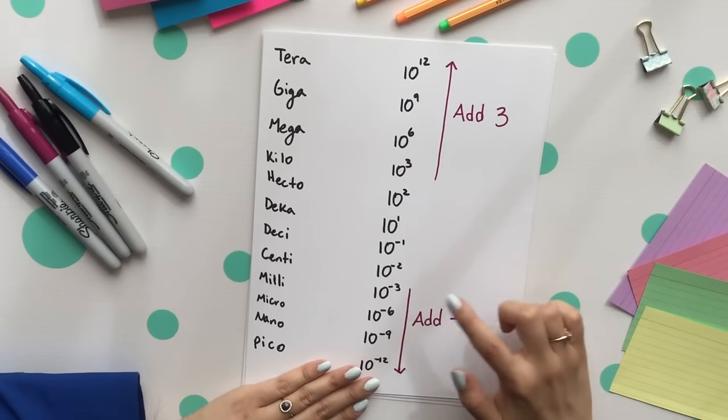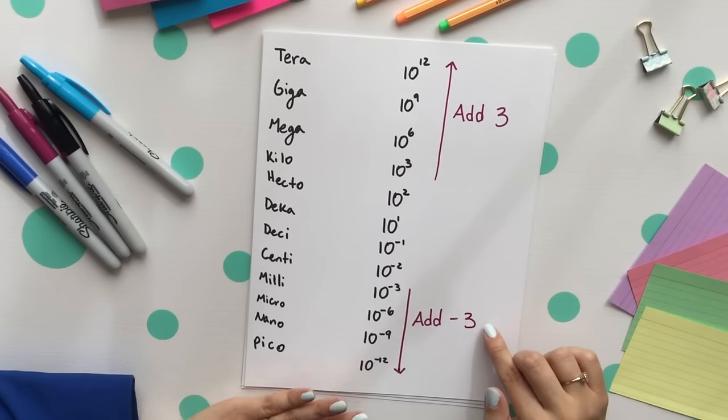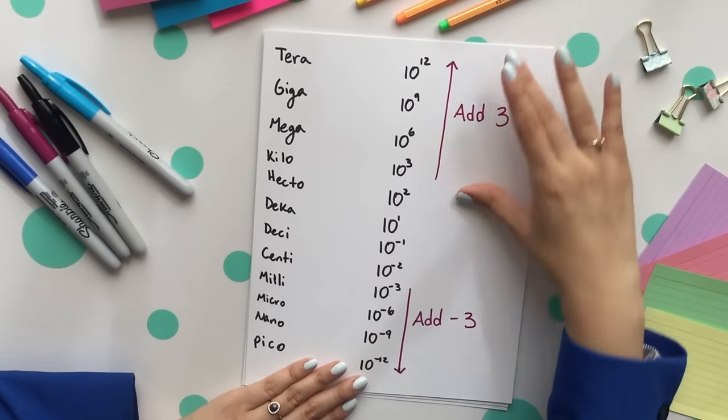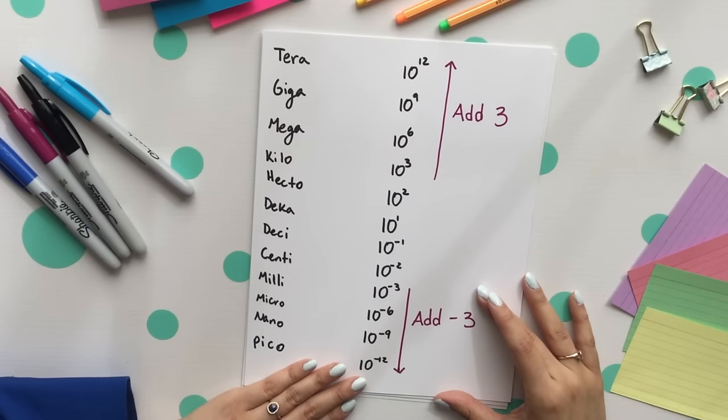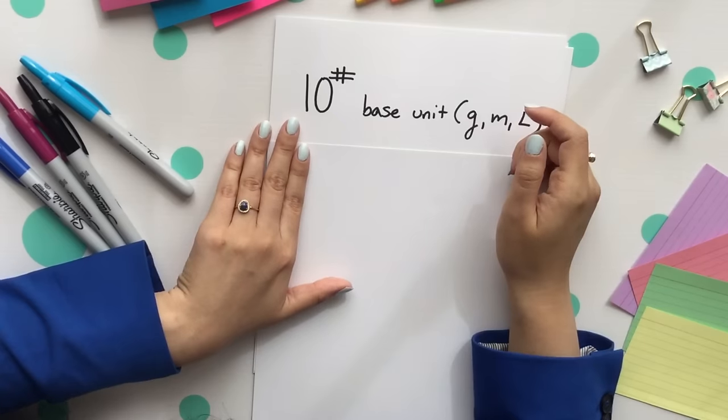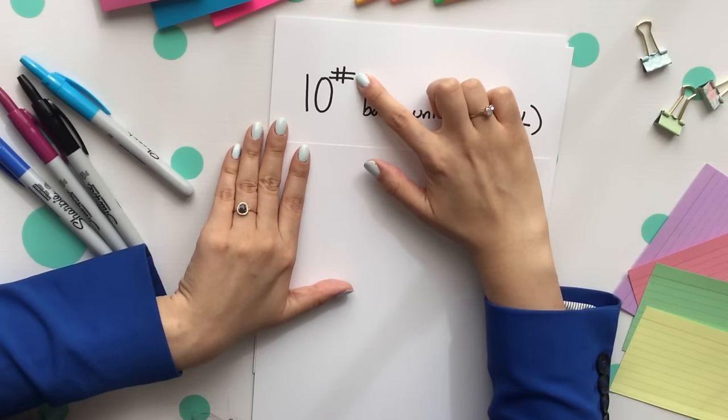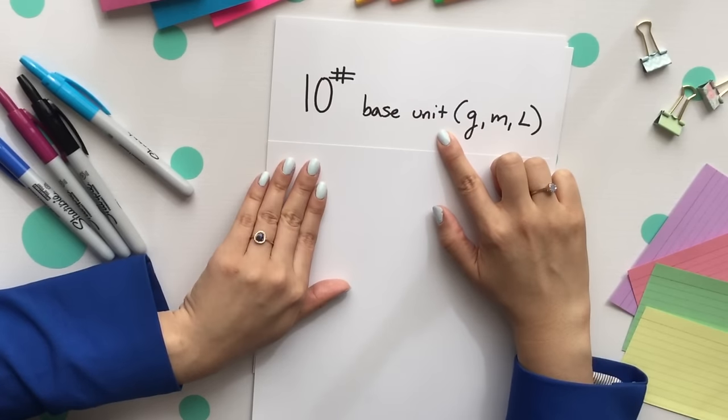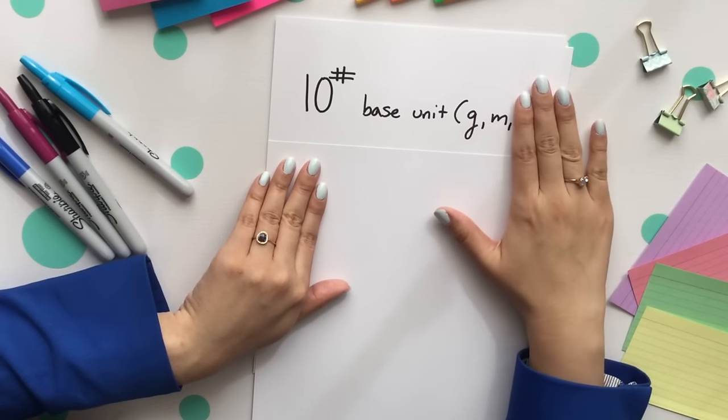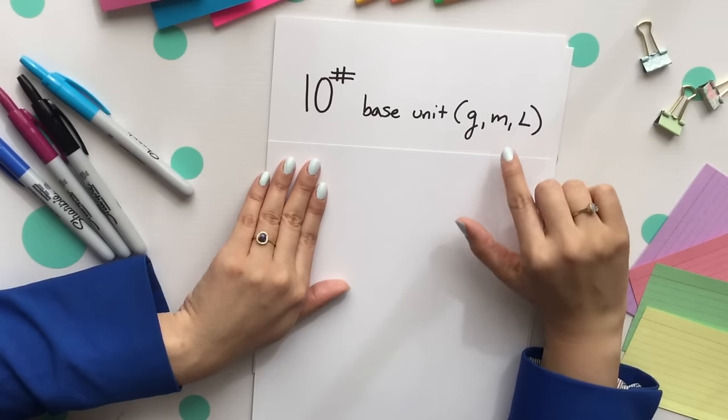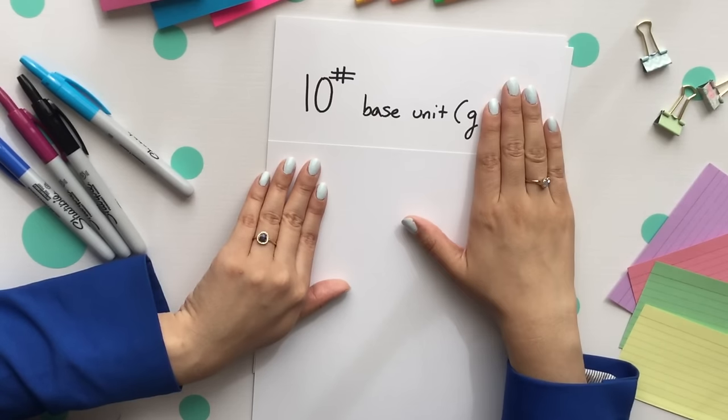Now for milli, we instead add a negative three. So the top one you add a positive three and the bottom half you add a negative three. To avoid any sort of guessing or the confusion of multiplying or dividing by a thousand, help me please, what do I do? Here's a trick for you. You want to place the 10 to some sort of exponent with the base unit. The base unit is our grams, our meters, or our liters. Notice that this is really just the one with one letter.